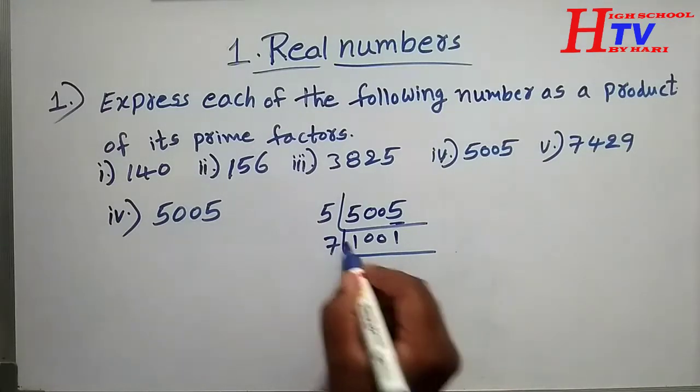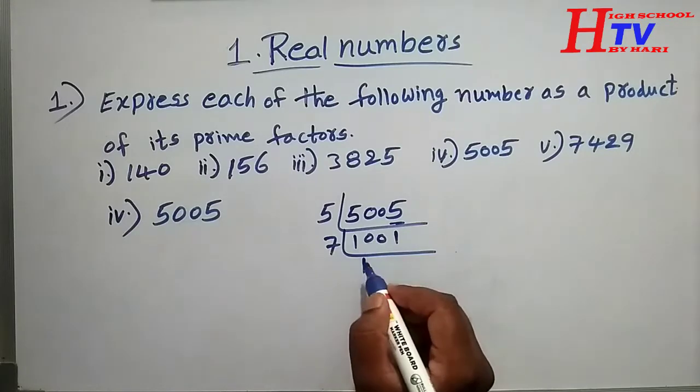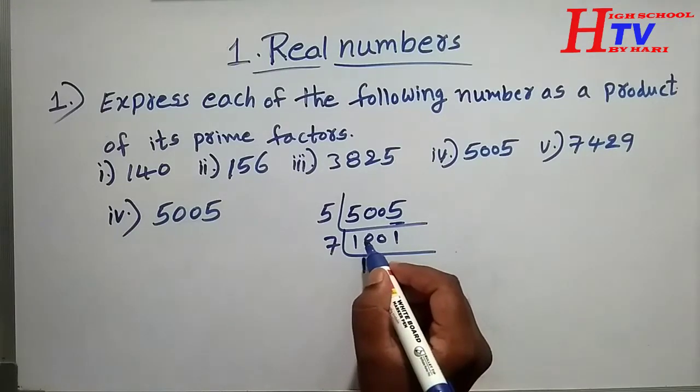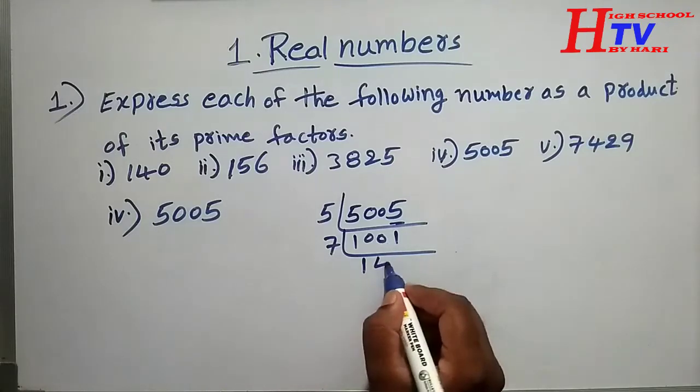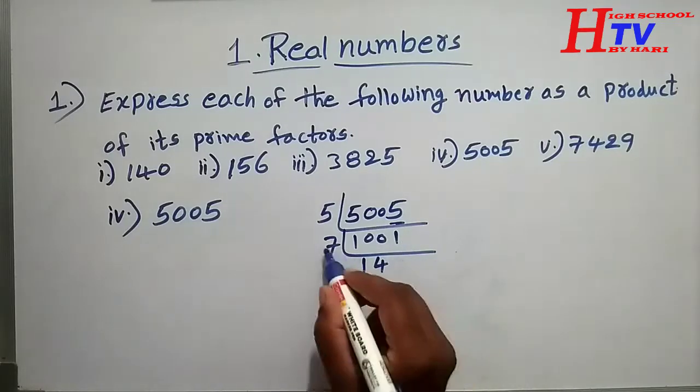It is divisible by seven. Seven into one thousand one. Seven goes into ten, that's three remainder. Thirty minus twenty-eight is two. Twenty-one goes into twenty-one, that's seven times three equals twenty-one.